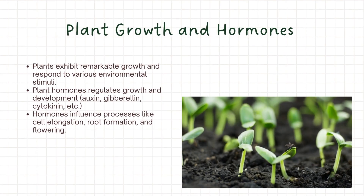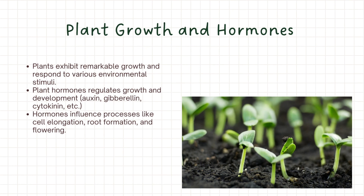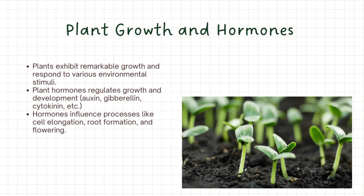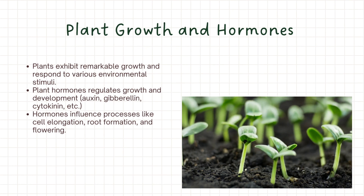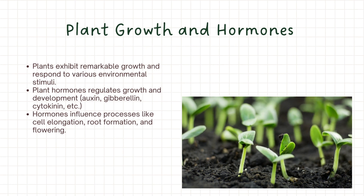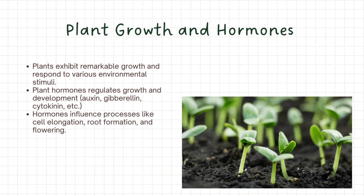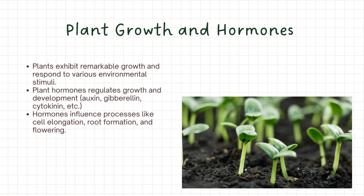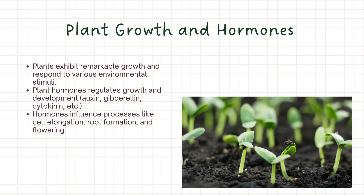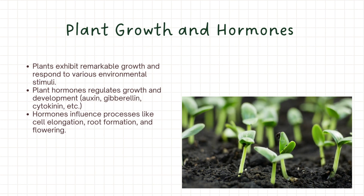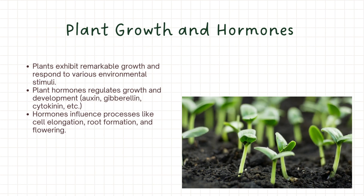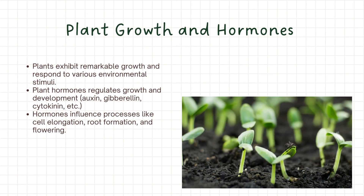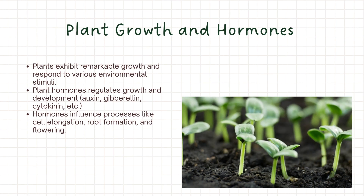Plant growth is a complex process regulated by hormones. Hormones like auxin, gibberellin, and cytokinin play vital roles in controlling cell elongation, root formation, flowering, and other developmental processes. These hormones act as chemical messengers, ensuring coordinated growth and responding to environmental stimuli.